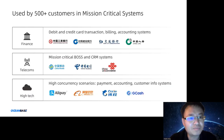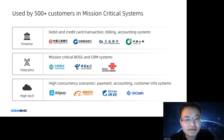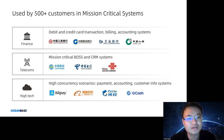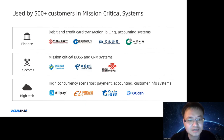OceanBase is used by more than 500 customers in mission-critical systems. In the finance industry, it is used in debit and credit card transaction, billing, and accounting systems — such as ICBC, the largest bank in China. OceanBase is also used in the telecom industry in mission-critical billing and CRM systems, such as China Mobile and China Telecom. Beyond finance and telecom, OceanBase is also used in high-tech, high-concurrency scenarios — payment, accounting, and customer information systems — such as Alipay, Alibaba, Ctrip, and GCash.